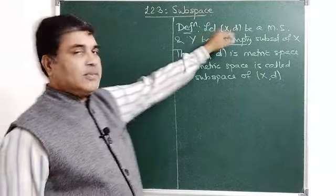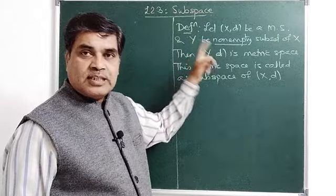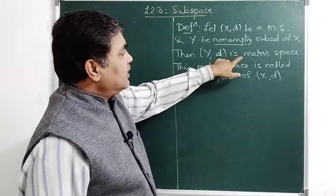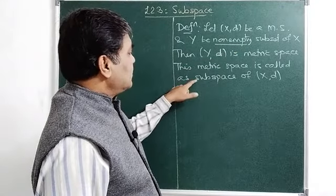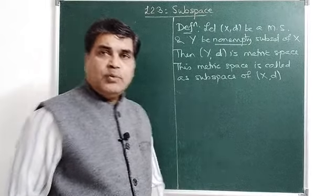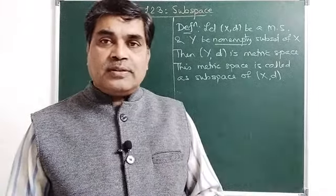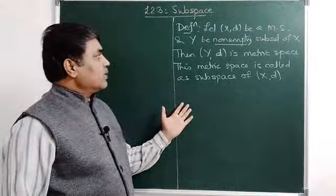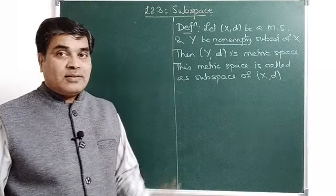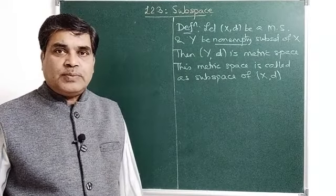See the definition: let (X, D) be a metric space and Y a non-empty subset of X. For a metric subspace, the set must be non-empty. Then Y together with the D function defined from X is a metric space, and this metric space is called a subspace of (X, D). Note that every non-empty subset of X defines a metric space with respect to D defined on it. If X is an infinite set, then it has infinitely many subsets and every non-empty subset gives rise to a subspace.